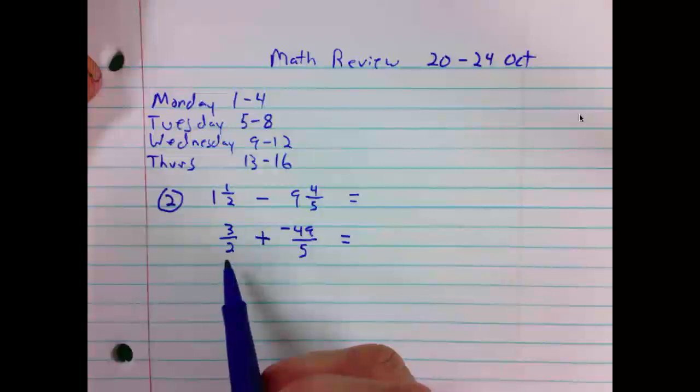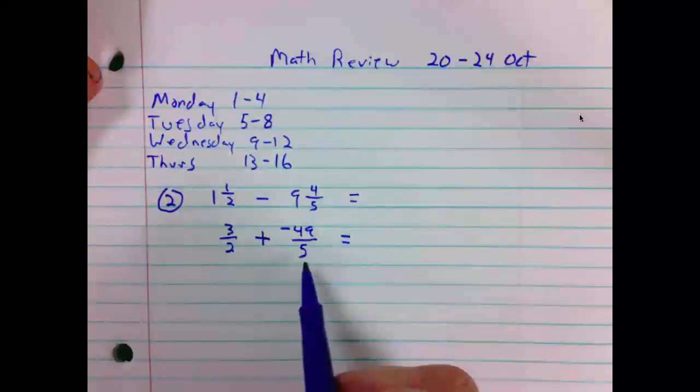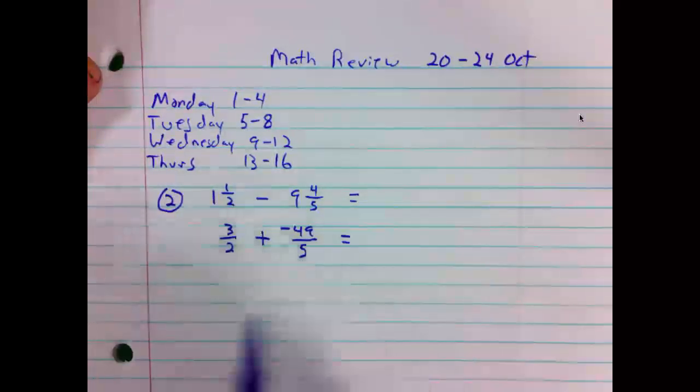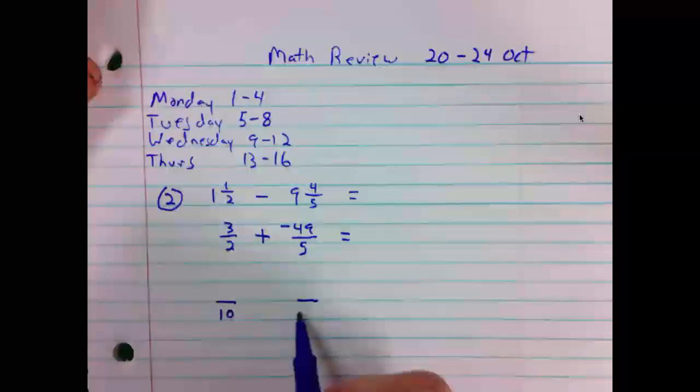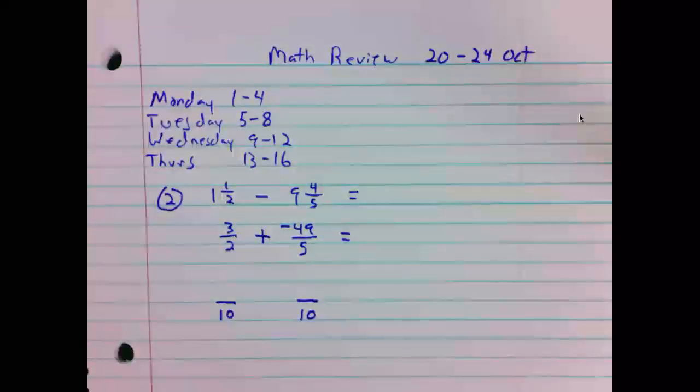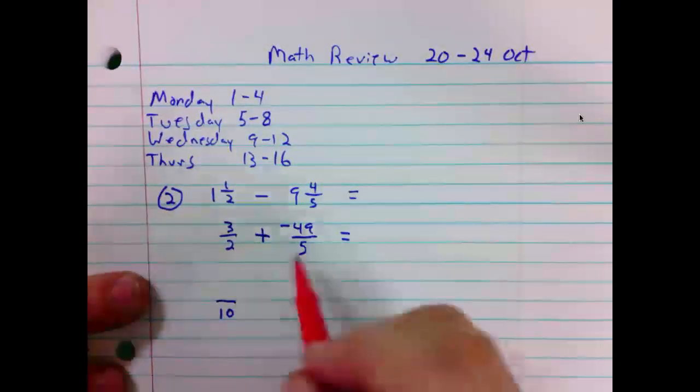We must have a common denominator. When we're adding or subtracting, we need a common denominator. What is the common denominator between 2 and 5? It is 10. One way to find a common denominator is to simply multiply the two numbers together. So consider 2 times what number is 10. Times 5.